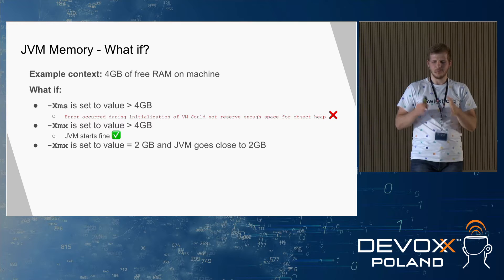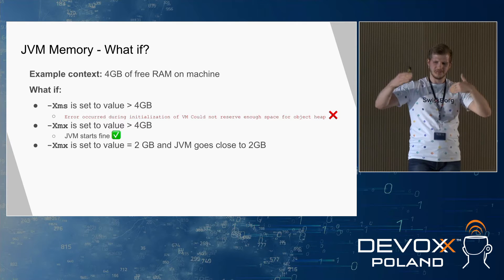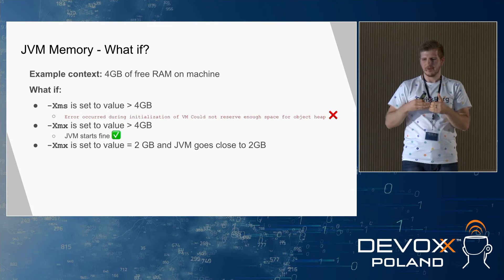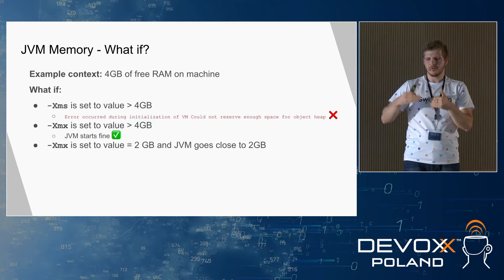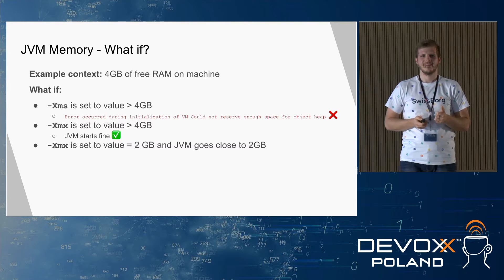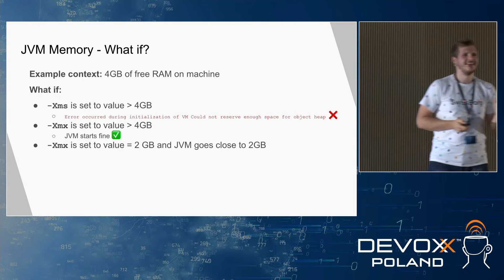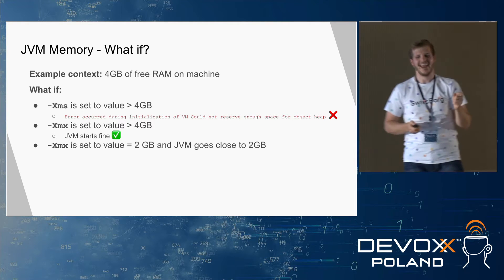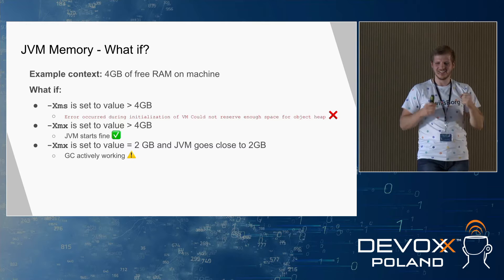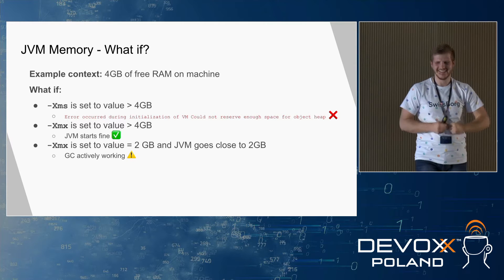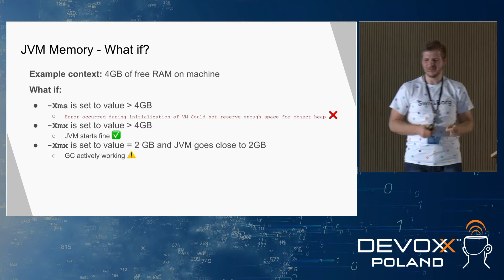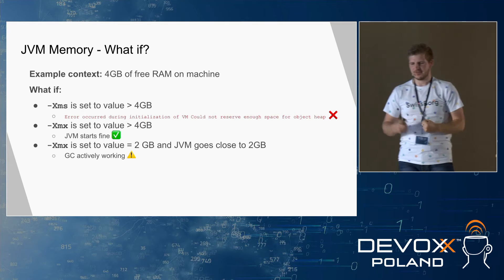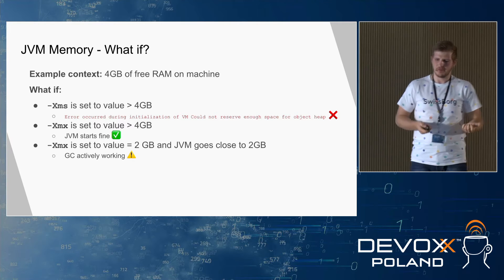What if XMX is set to 2 GB — fine within our space — but JVM goes close to this limit? GC will actively work and try to free the memory, doing what it can.